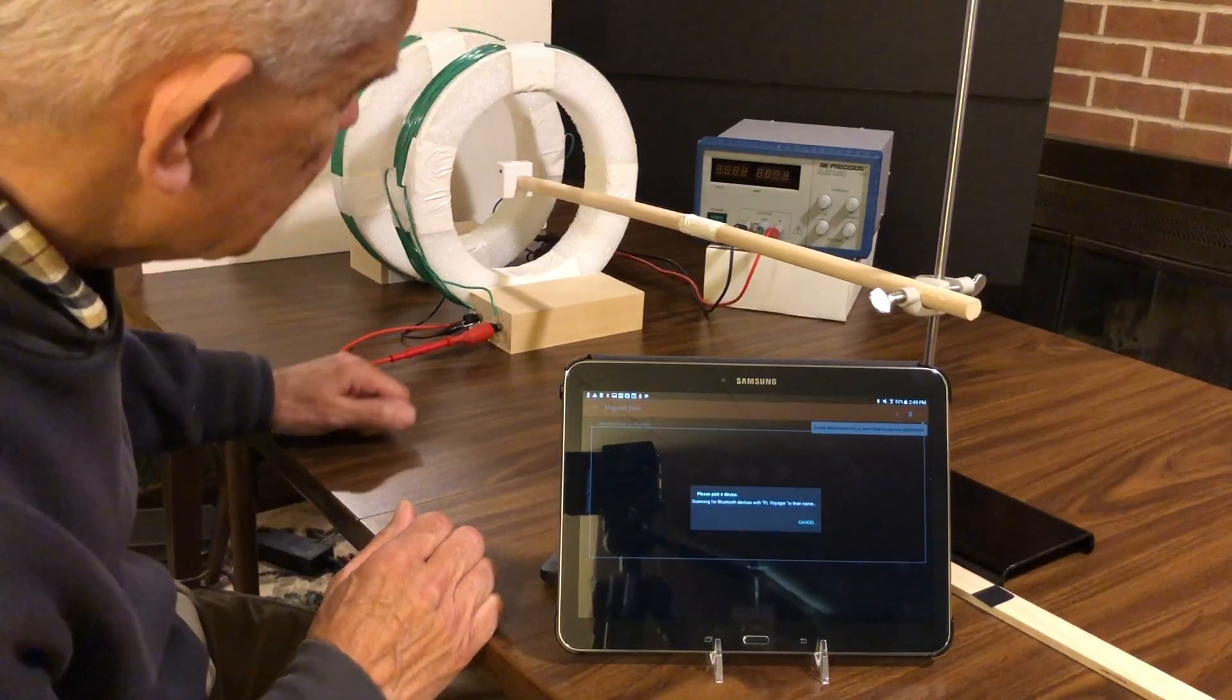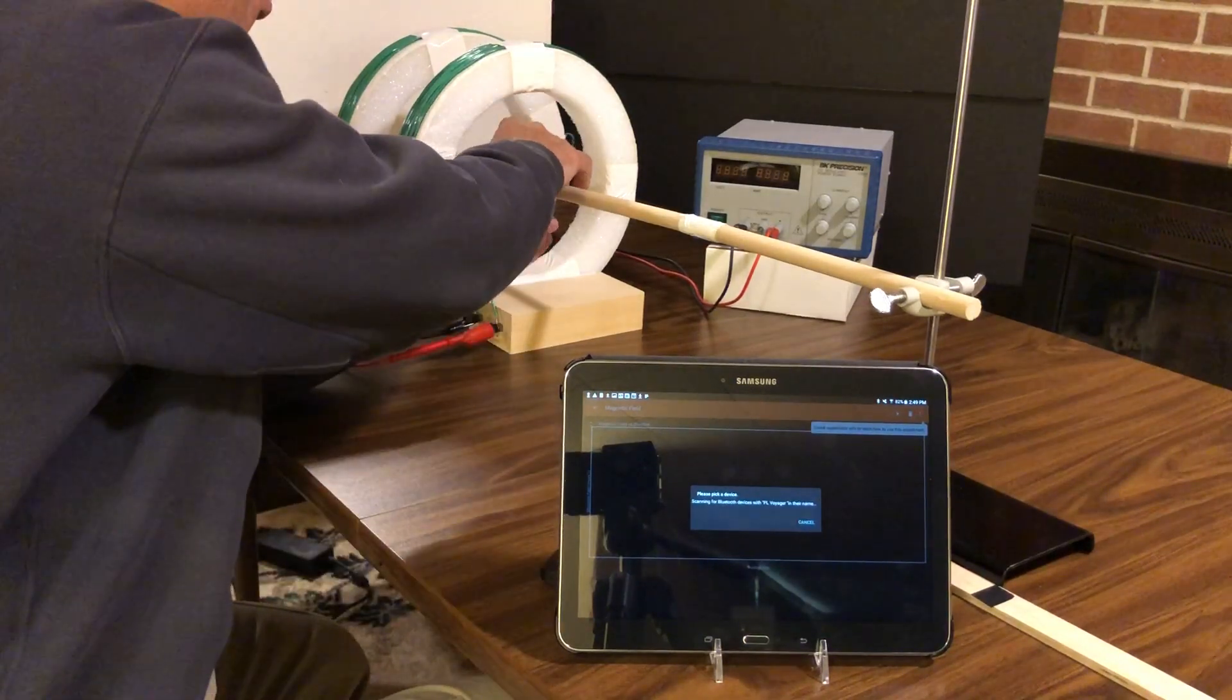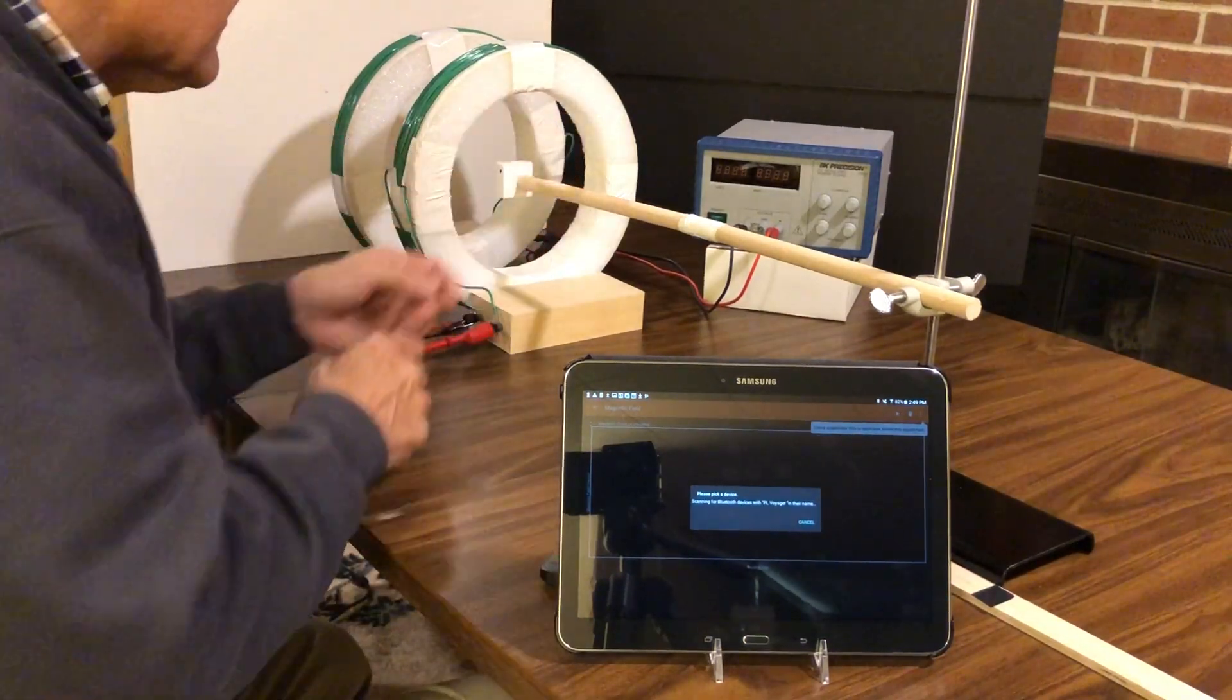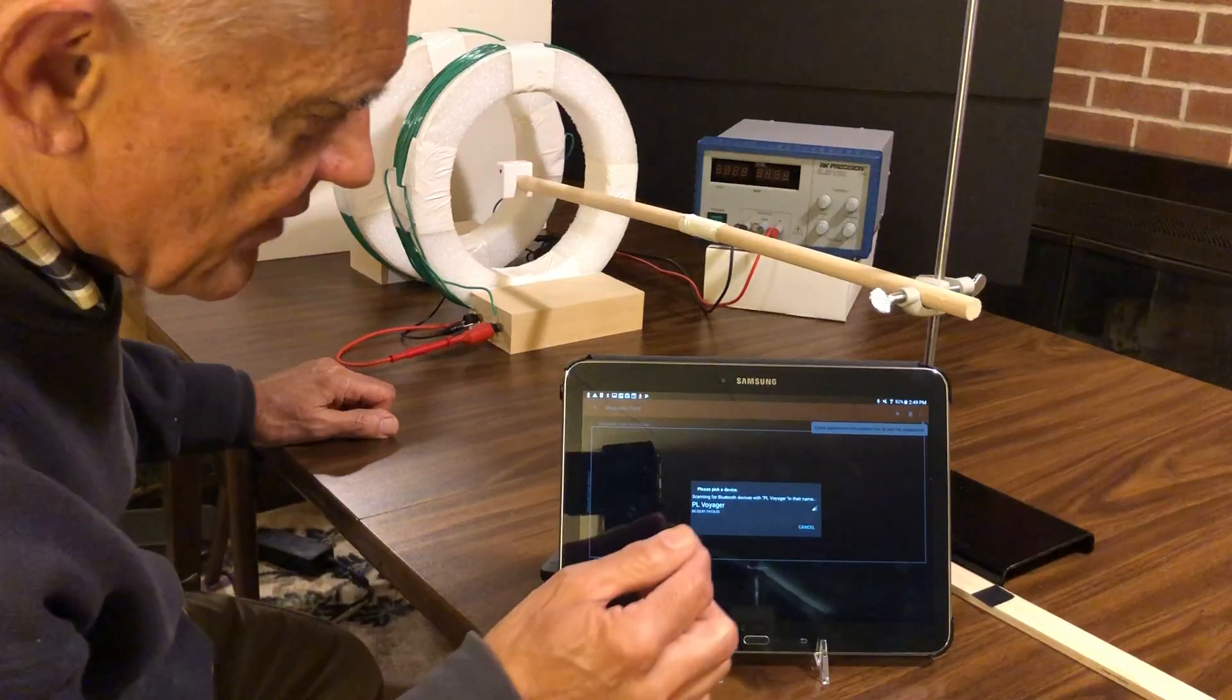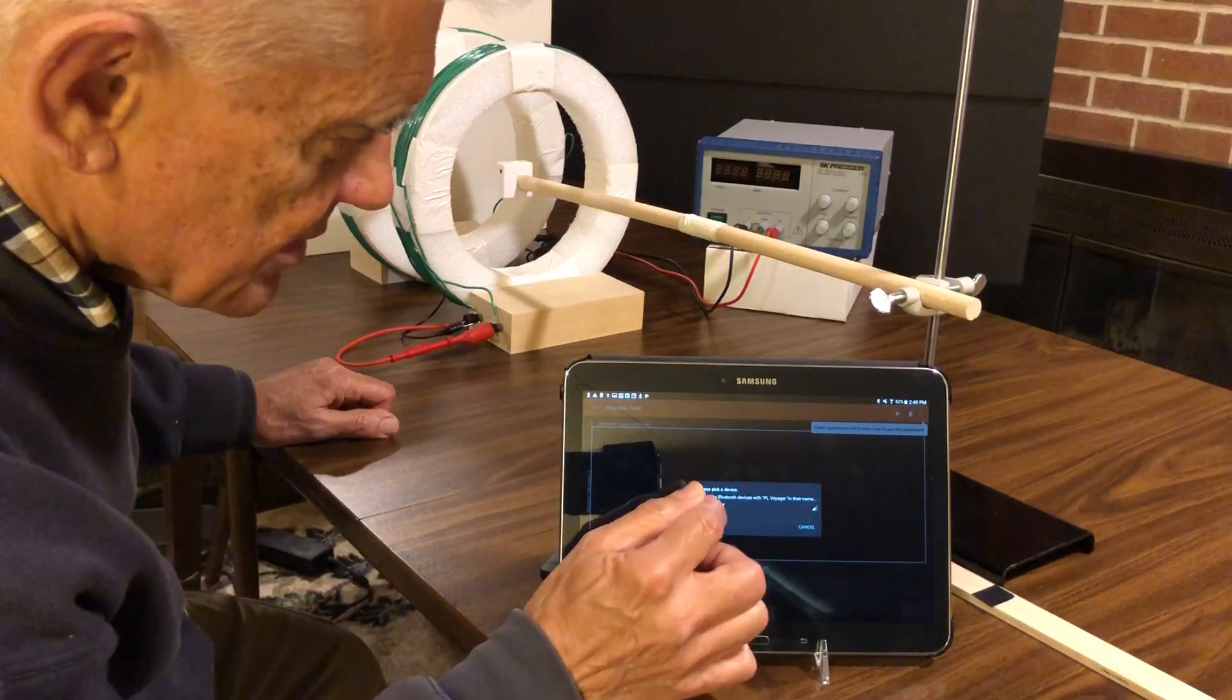It's now asking us to pick a device so I'm going to turn on Voyager. It's recognized Voyager via Bluetooth so I'll select it right here.